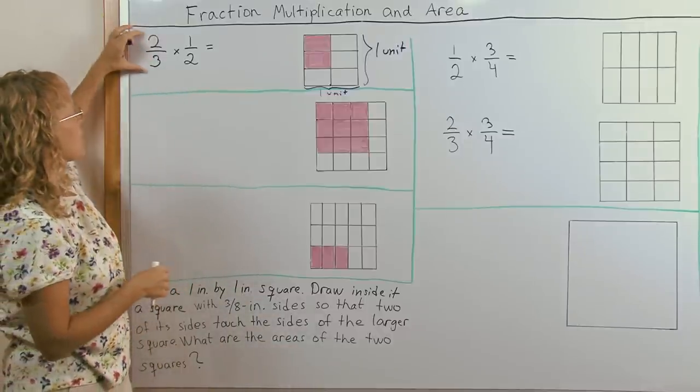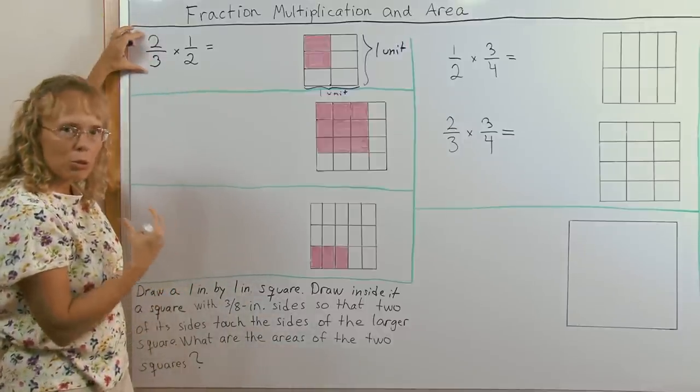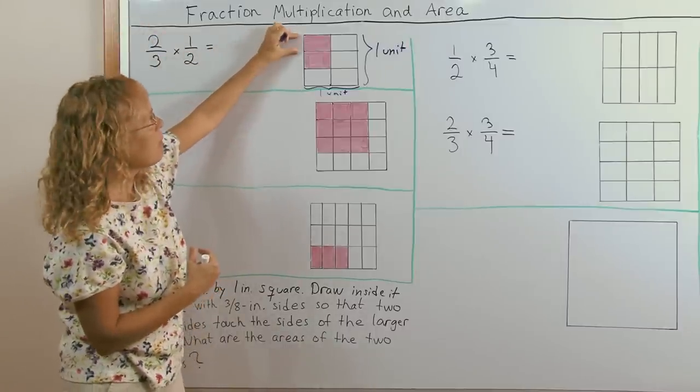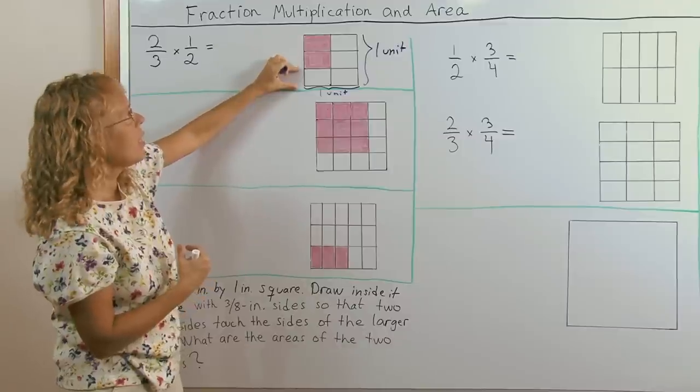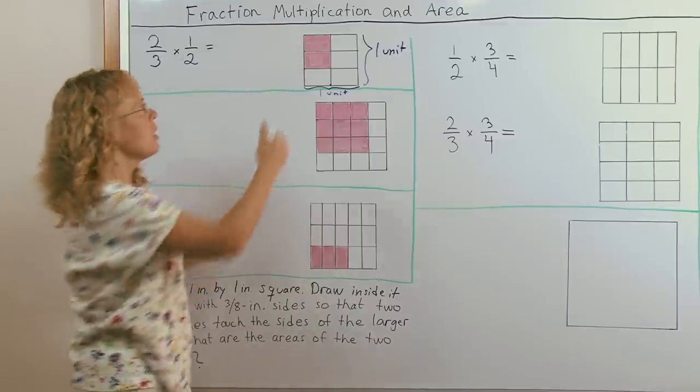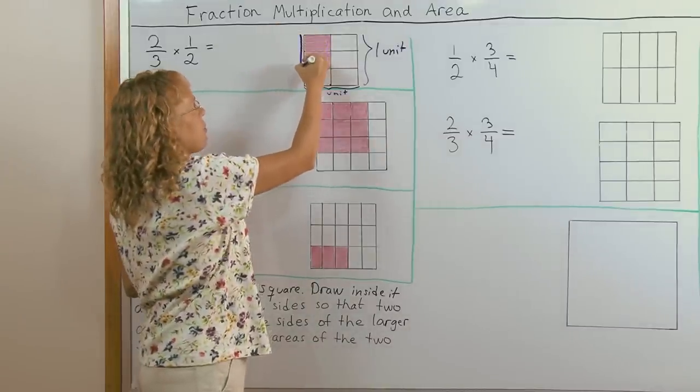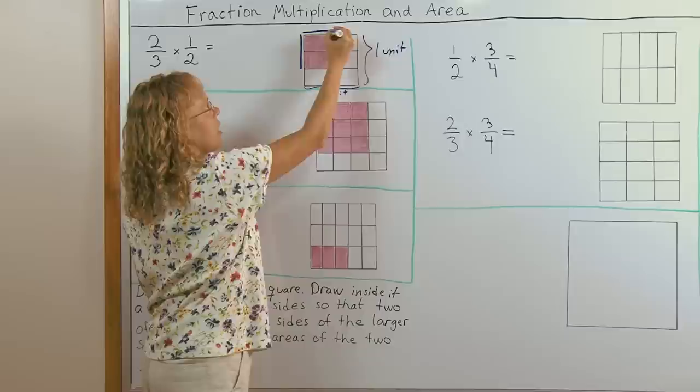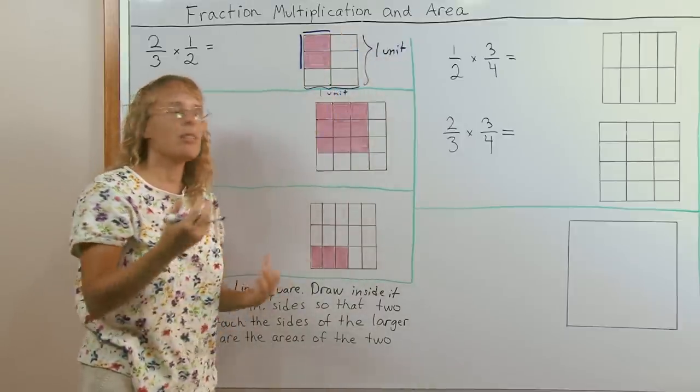Now we can illustrate this fraction multiplication using this. On one side, we will take two thirds. This side I have divided into three parts: one part, two and three. And then I take two thirds, this length here. And then I take half. On this side, I take half of the unit, half an inch or half a meter or whatever.